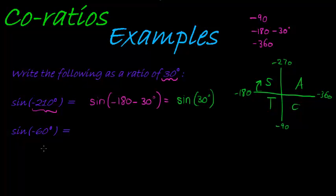The next one, sine of negative 60 degrees. Which one can we use? Hopefully you see that one. We can write this as sine of negative 90 degrees plus 30 degrees.